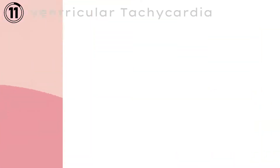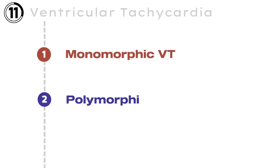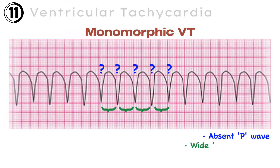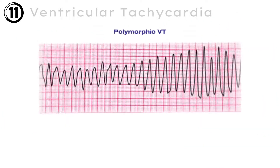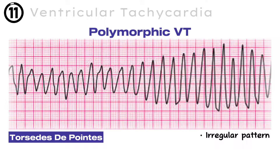ECG number 11: Ventricular Tachycardia. Ventricular tachycardia has two further types: monomorphic VT and polymorphic VT. Monomorphic VT has no clear P wave, and the QRS complex is wider — more than 120 milliseconds — and every beat looks the same. While in polymorphic VT, there is clear variation in every beat, and the most common example of polymorphic VT is Torsades de Pointes.